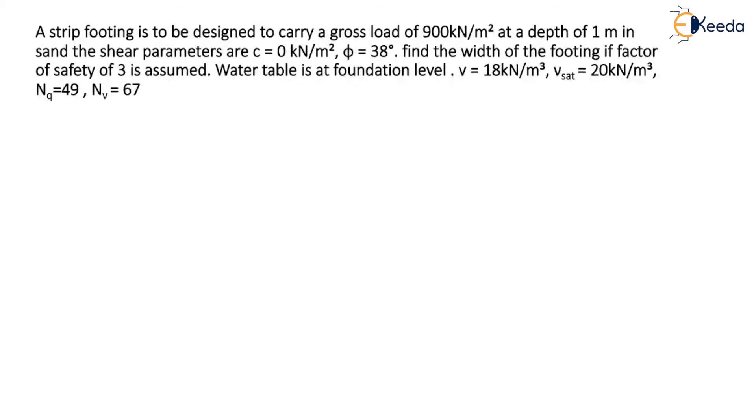The soil at the site has c equal to 15 kN per meter square, phi is equal to 25 degree and gamma is equal to 18 kN per meter cube. Nc dash is equal to 14.8, Nq dash is equal to 5.6 and N gamma dash is equal to 3.2.